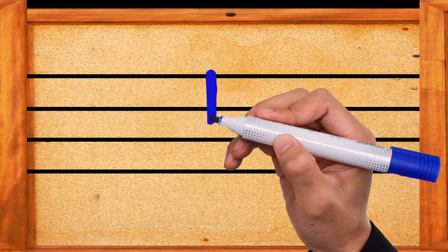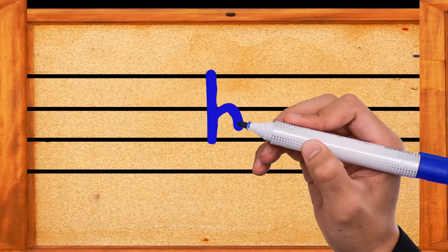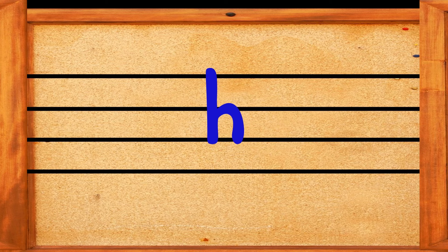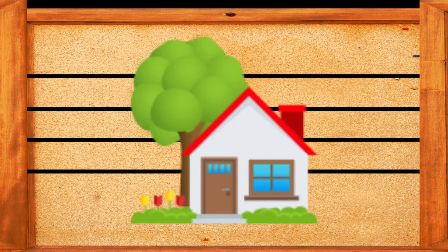Go down and down, then go slightly up, make a curve and go down again. This is the letter H. H is for house.